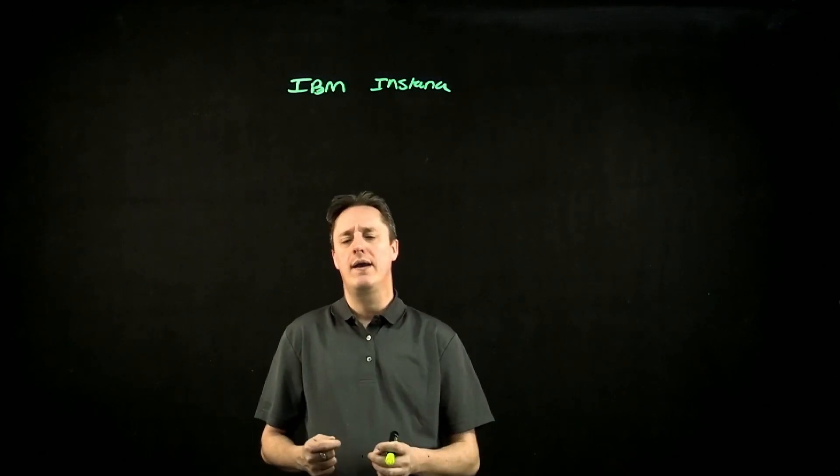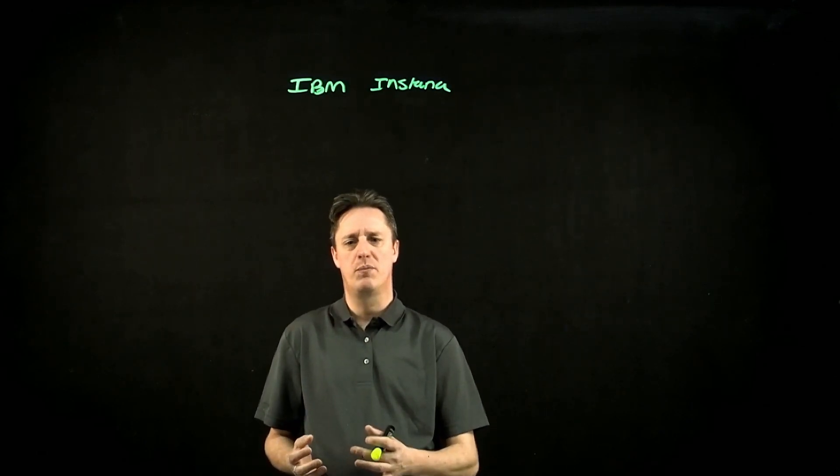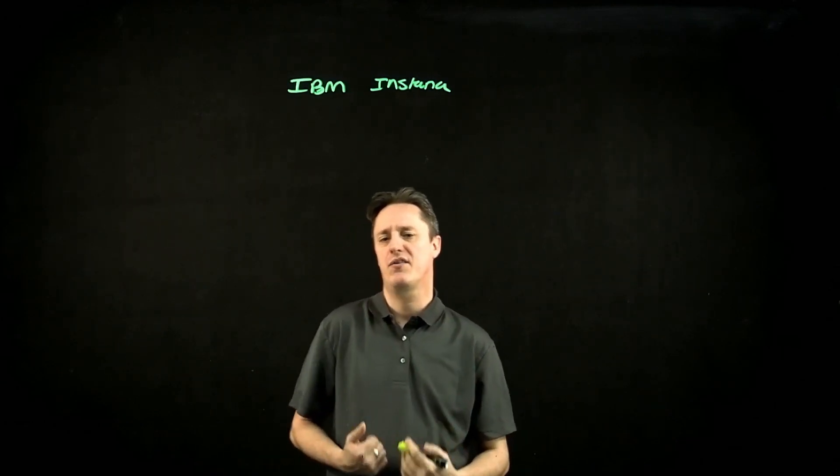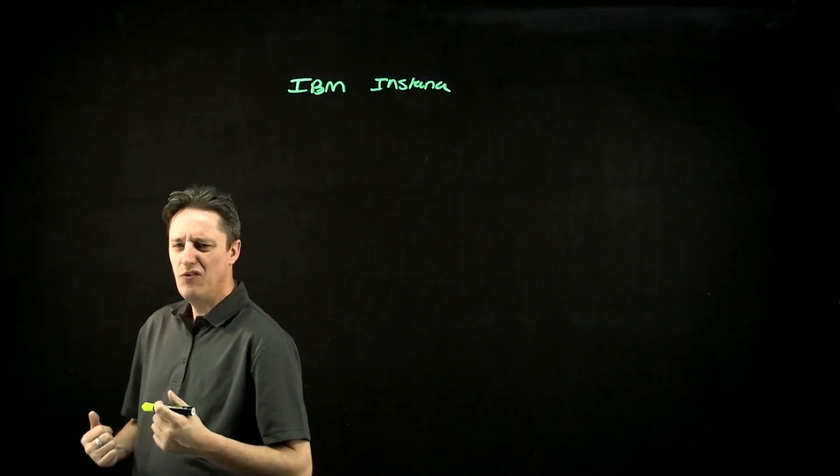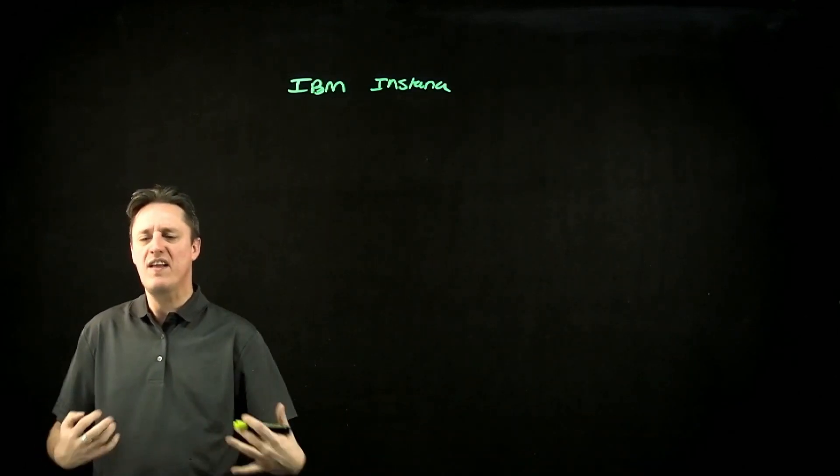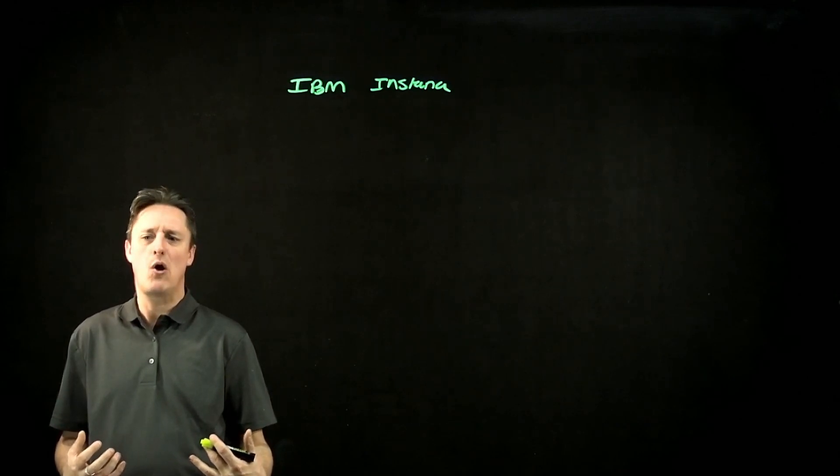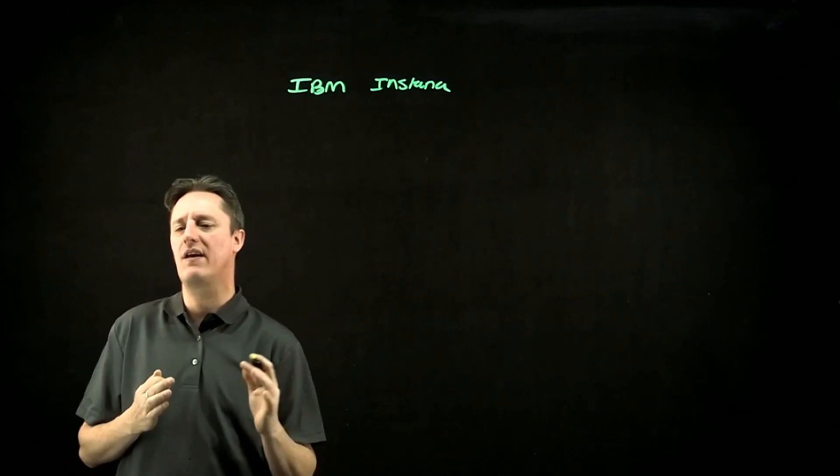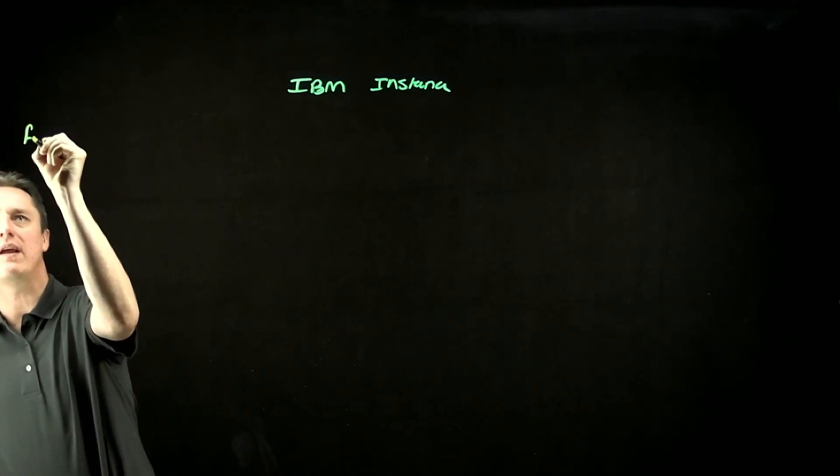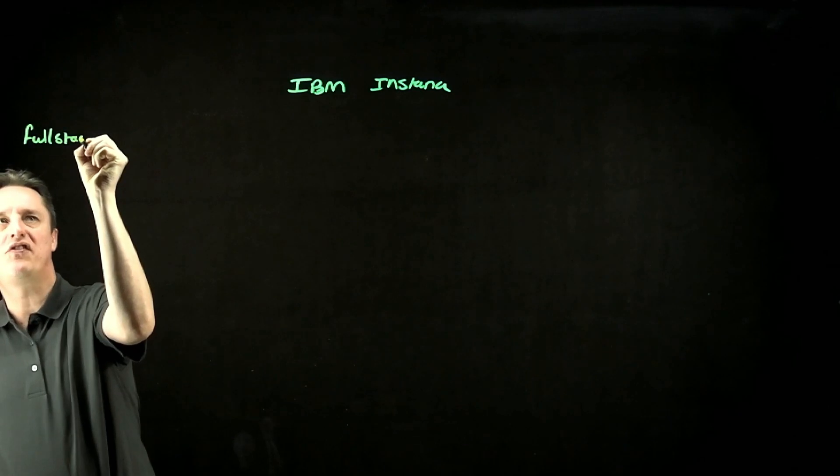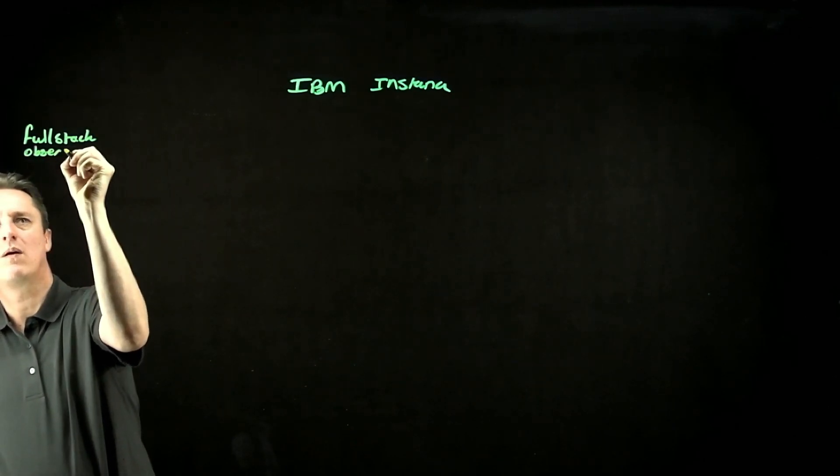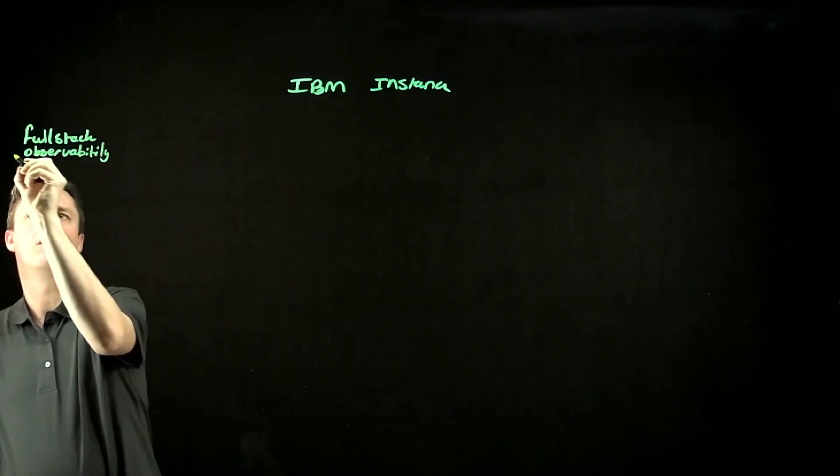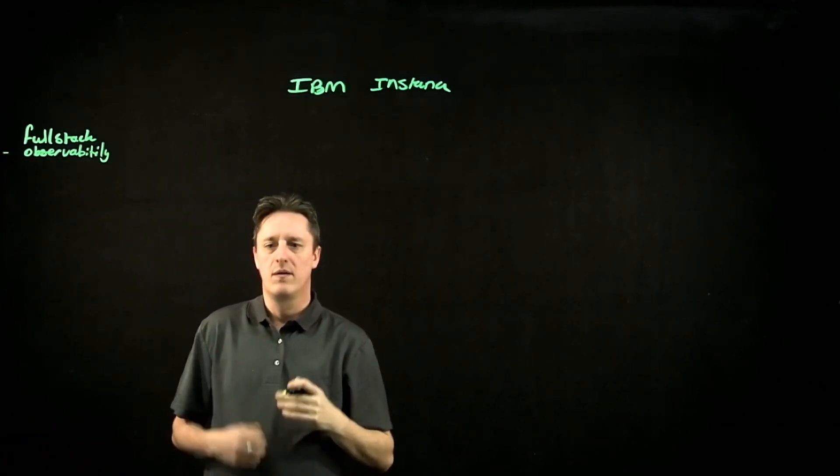How do I identify issues between all the relationships of all of these different components? So I think what most of my customers are asking for is observability into everything that is their application employer. So a full stack observability solution. And this is one of the things that Instana provides is literally a full stack observability offering.